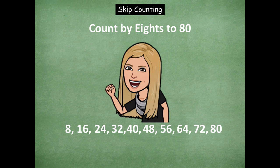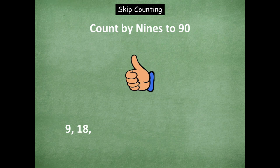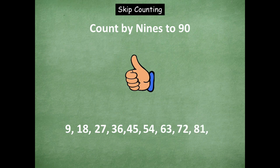Good job counting by eights to 80. Let's go — nines to 90. Counting up: nine, 18, 27, 36, 45, 54, 63, 72, 81, 90.